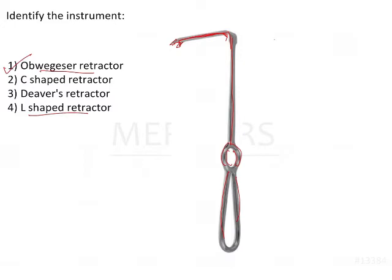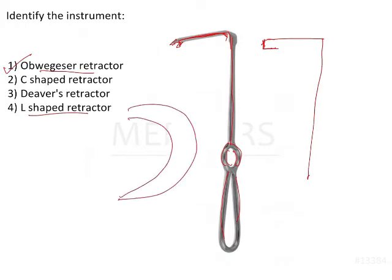The L-shaped retractor, or Langenbach's retractor, is basically just an L-shape — it is exactly L-shaped. It looks like this retractor only, but the end is straight, and it is used to retract the cheek as well as sometimes to retract the tongue. The C-shaped retractor is like this and is also used for the same purpose.